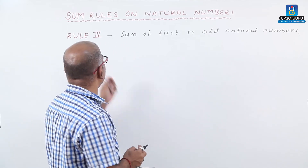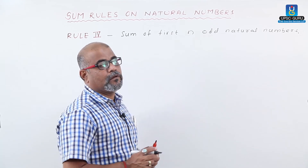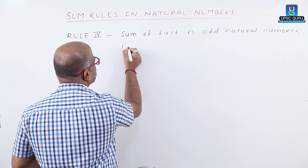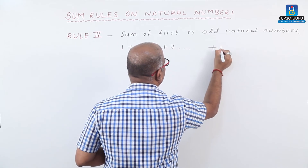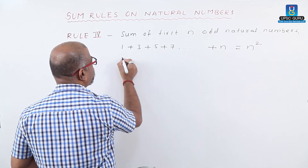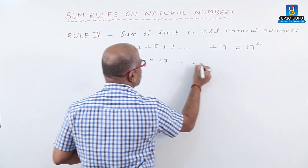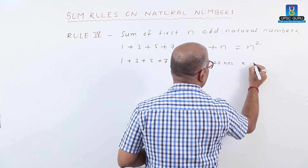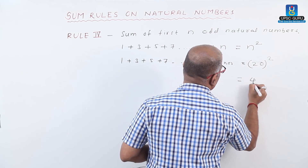Rule number 4: the sum of the first n odd natural numbers. The odd natural numbers are 1, 3, 5, 7 up to n. The formula is n squared. For example, find the sum of the first 20 odd natural numbers. The answer equals n squared, that is 20 squared, which gives 400.